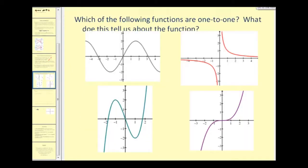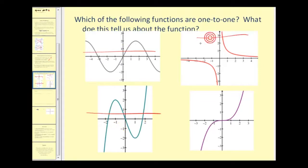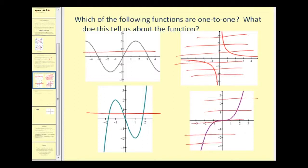Let's look at four functions. Which of these are one-to-one functions? Remember, to determine if a function is one-to-one, we perform the horizontal line test. This first function quickly fails the horizontal line test, so it's not one-to-one. This one obviously fails as well. The two on the right pass — a horizontal line never intersects those graphs in more than one point. So the two on the right are one-to-one functions and therefore have inverse functions, while the two on the left do not.